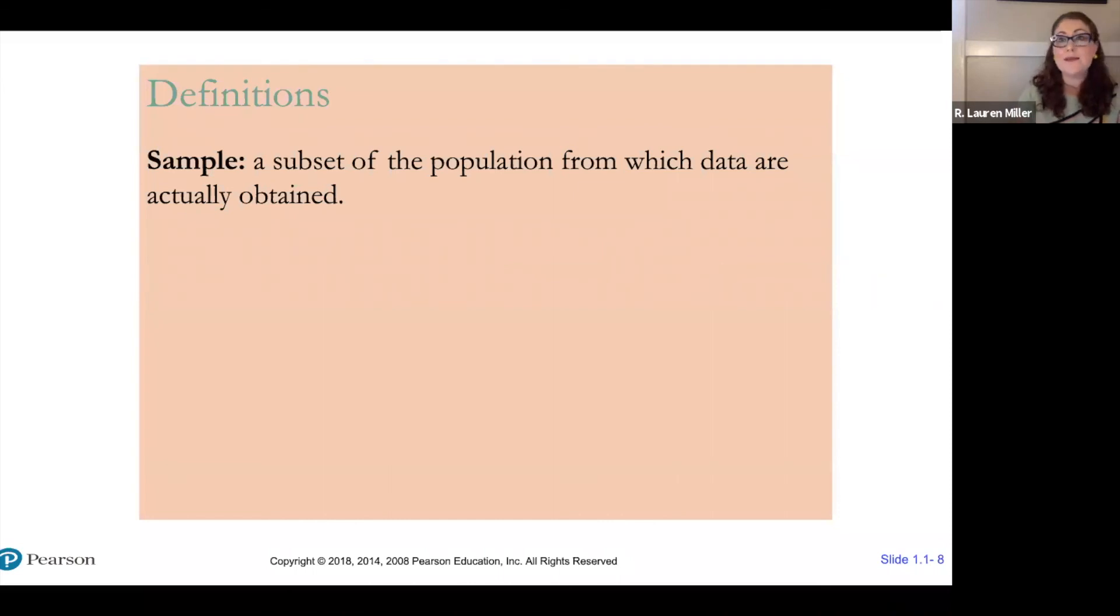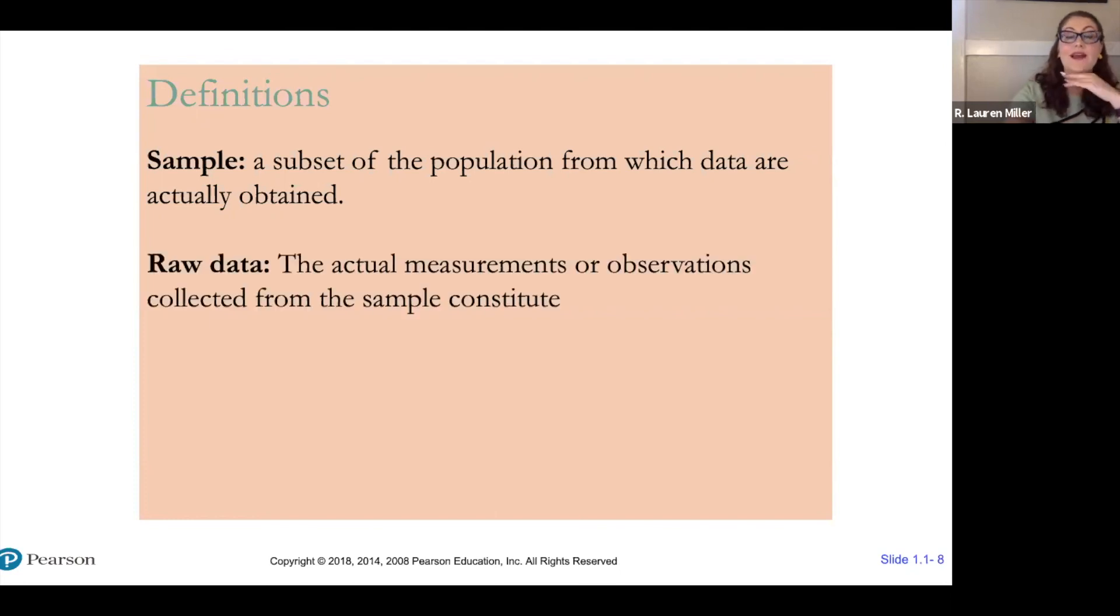A sample is a subset of the population from which our data are actually obtained. Data refers to any information about a population. The raw data are the actual measurements or observations we collected from the sample.